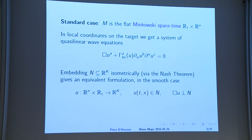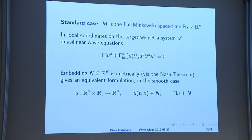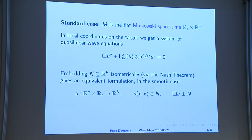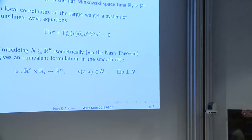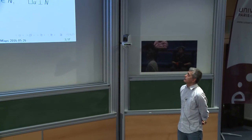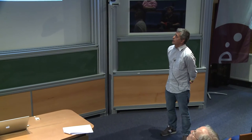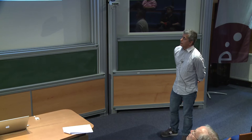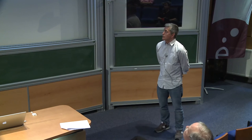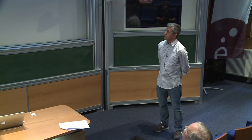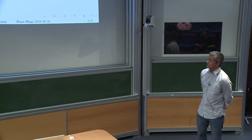Let us consider more concretely what kind of equation we have to deal with. The standard situation in which wave maps are studied is starting from a flat Minkowski space. In this case M is usually written as R times R^N — this is the simplest and best understood case. If you expand in coordinates, you get a system of non-linear wave equations — quasi-linear wave equations with a very nice structure. The gamma are the Christoffel symbols, and you get a quadratic form in the derivatives which is a null form.